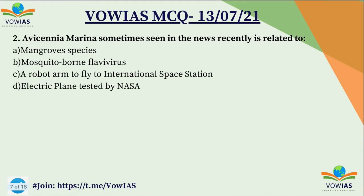Now let's move on to the second question: 'Avicinia marina, sometimes seen in the news, is related to what? A) mangrove species, B) mosquito-borne flavivirus, C) a robotic arm to fly to the International Space Station, D) electric plane tested by NASA.' The correct answer is A, mangrove species.